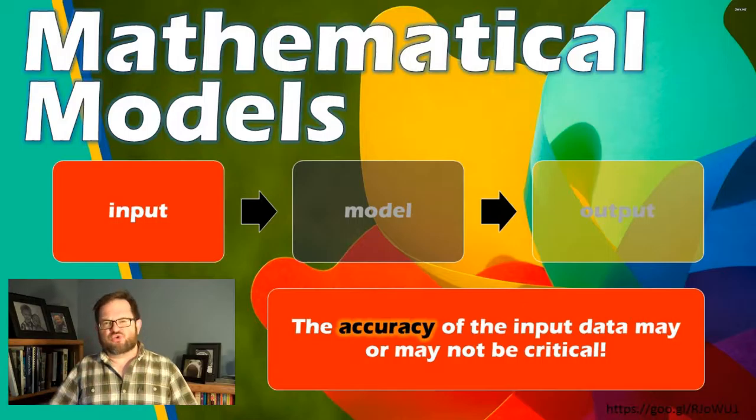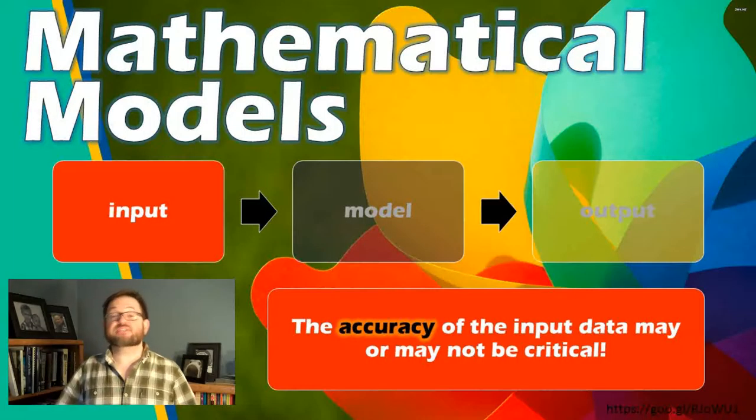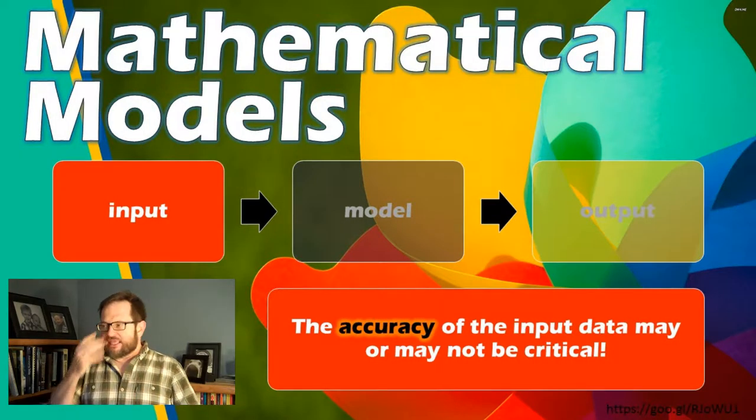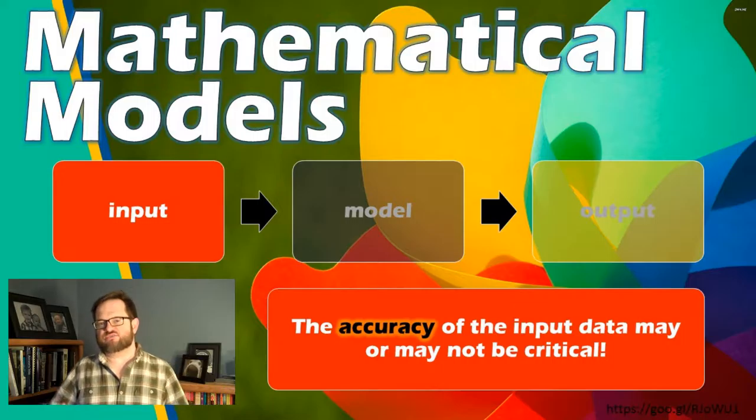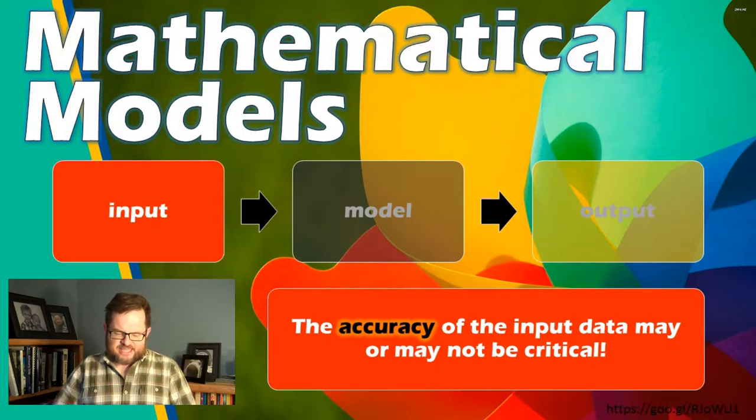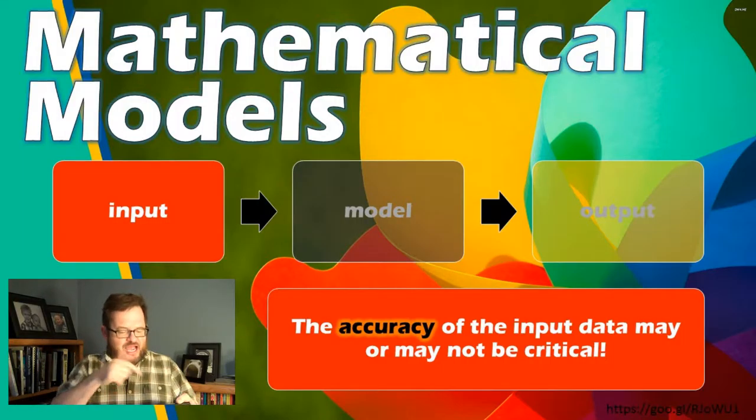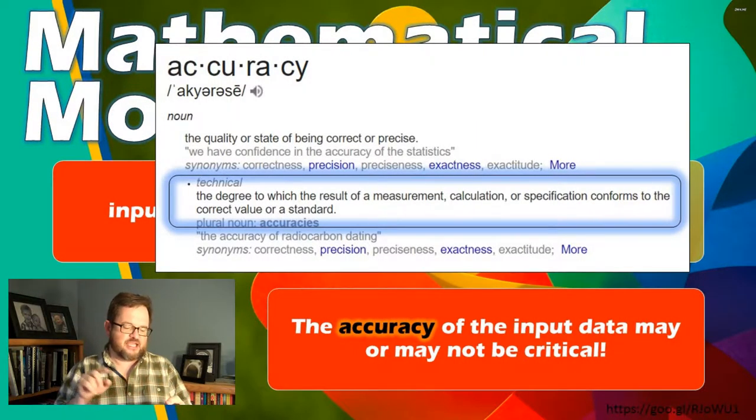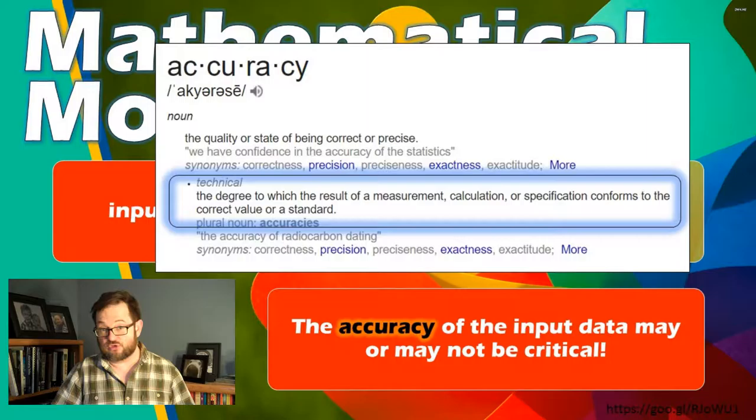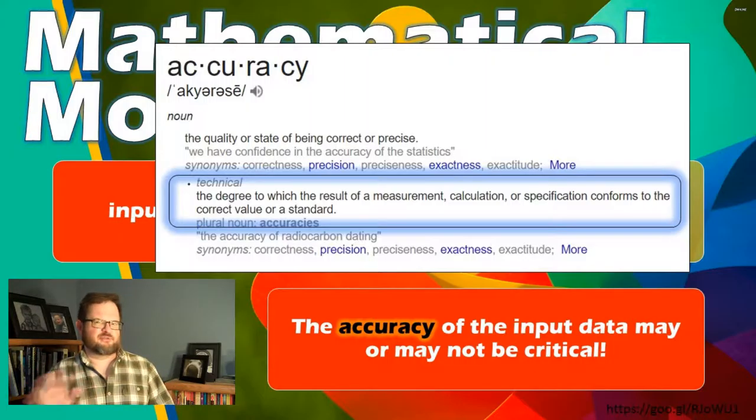Now, there's a whole issue here about how accurate do those mathematical representations of these input parameters have to be? How accurate do they have to be? That may or may not be critical. And that's related to this issue of chaos, which we're going to learn about in a later lecture in this module. But you can get a sense that the accuracy of the data might matter. This is accuracy in the sense of how close. To use a dictionary definition here of accuracy, I like the degree to which the result of a measurement, calculation, or specification conforms to the correct value. This is different from precision, which is how many digits there are. We've talked about this whole accuracy versus precision thing before.